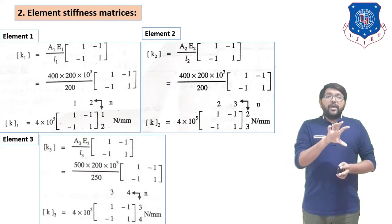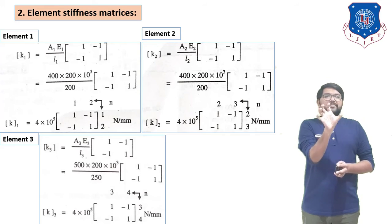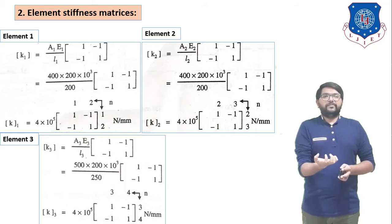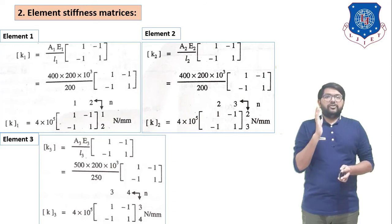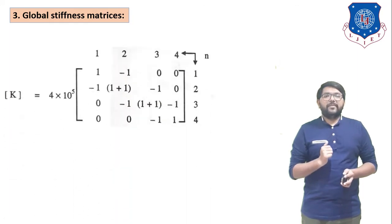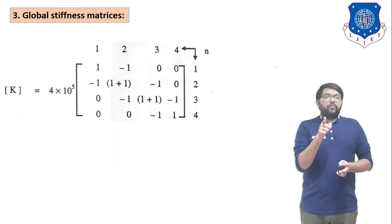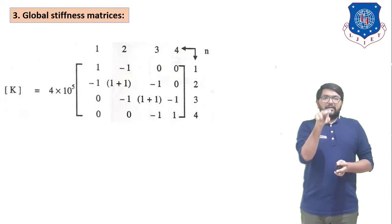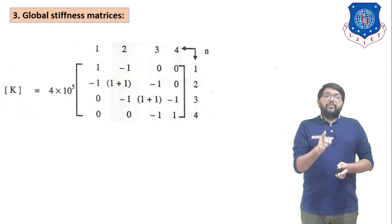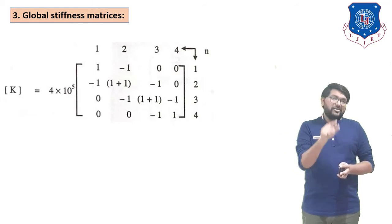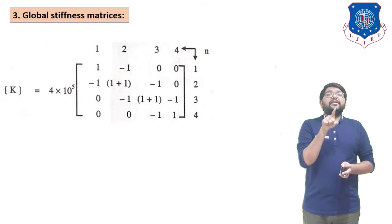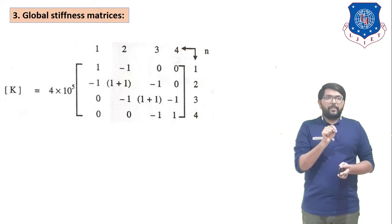Now we combine all three element stiffness matrices into the global stiffness matrix. The size of the global stiffness matrix is 4 × 4, because there are 4 nodes in total. The common factor 4 × 10⁵ applies across all three matrices.